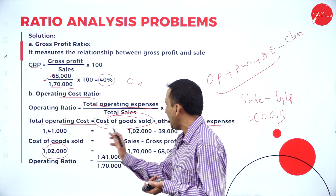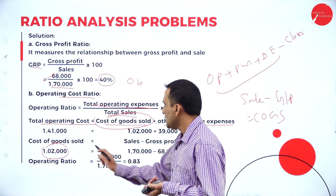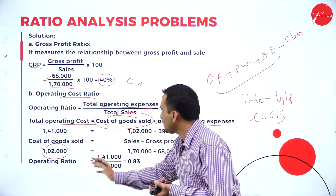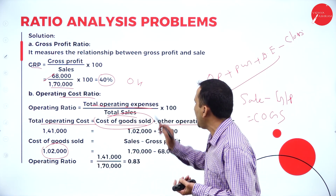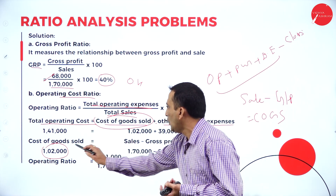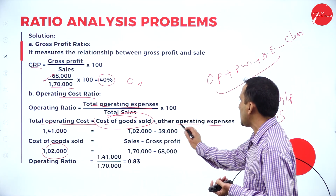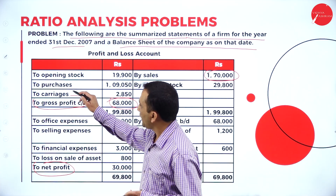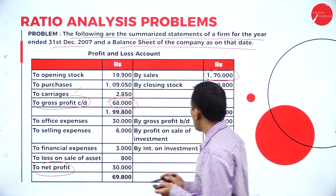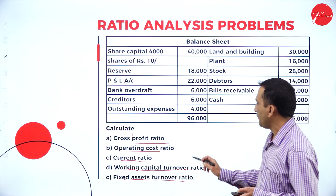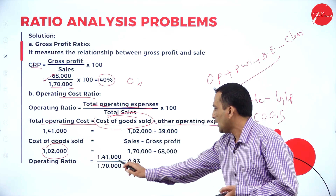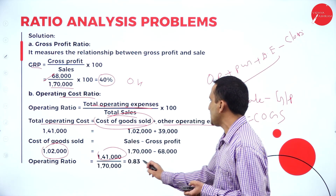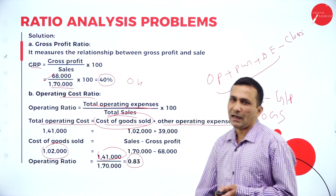Adding up totals: the operating cost ratio — cost of goods sold 1,02,000 plus other operating expenses given in the question, carriage and office-related, gives total operating expenses of 1,12,000. Total operating expense divided by total sales is 0.83.